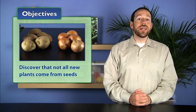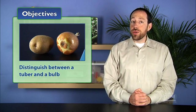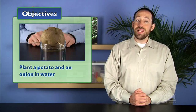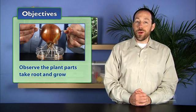In Activity 10, New Plants from Plant Parts, students discover that not all new plants come from seeds. Students first distinguish between a tuber and a bulb, then plant a potato and an onion in water and observe the plant parts take root and grow.